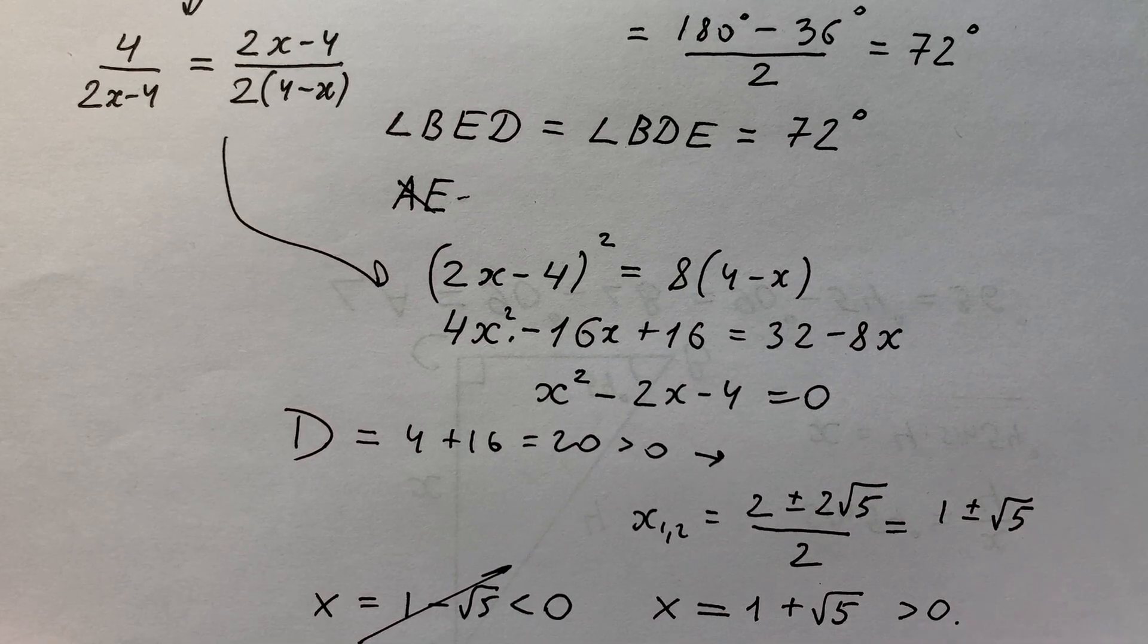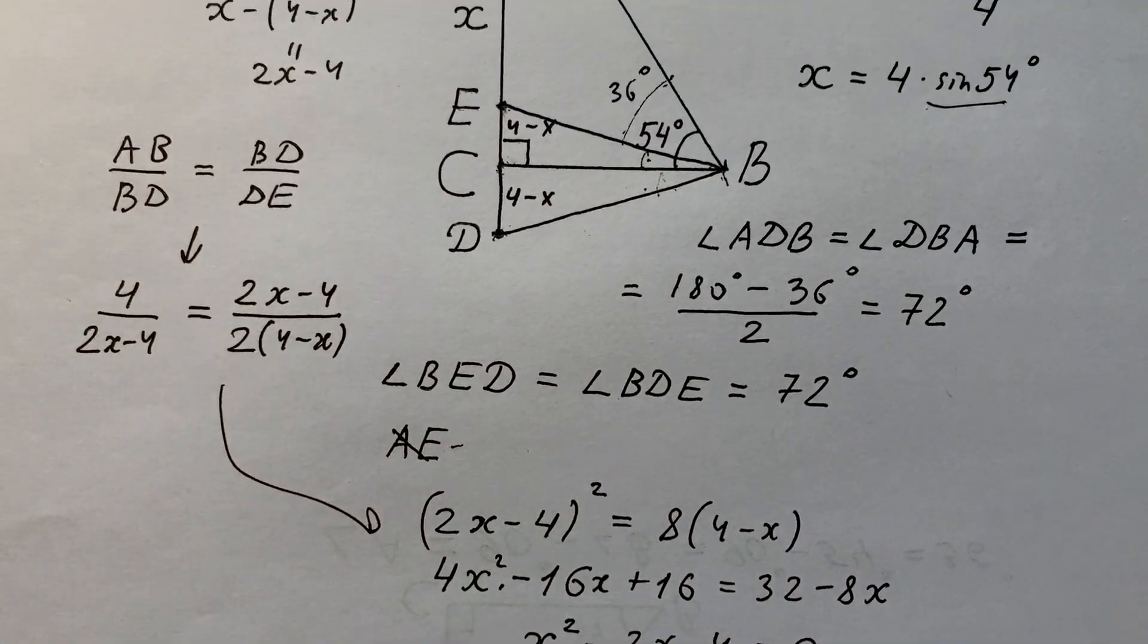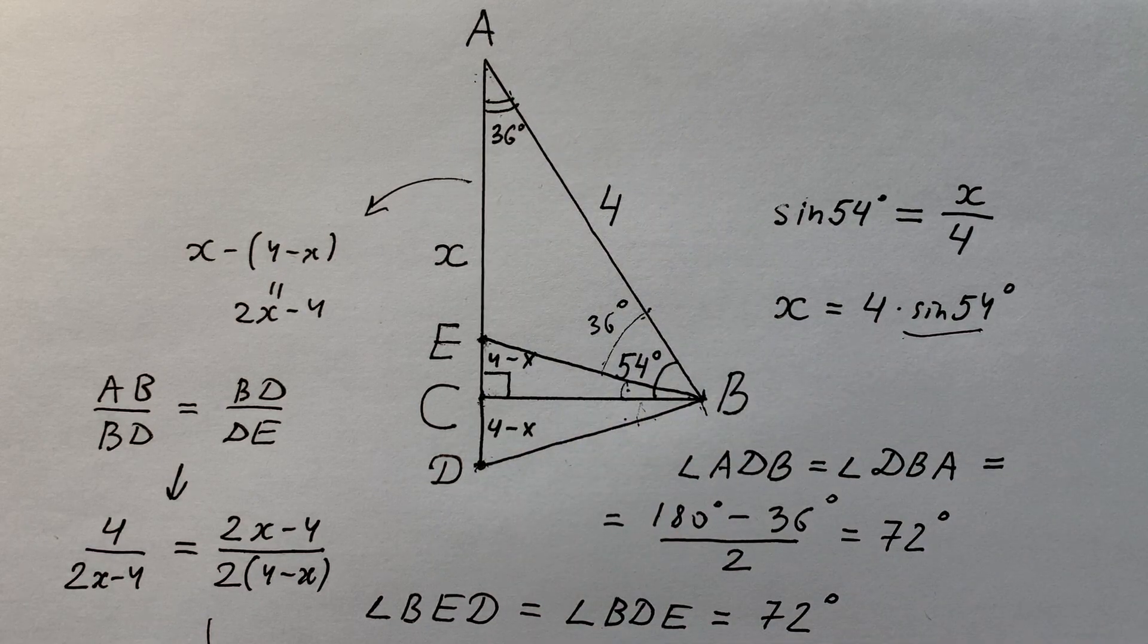So we have the second solution and it's very good because it equals 1 plus √5 and it's bigger than 0. x equals 1 plus √5, and that's the solution to our really heavy geometrical problem.